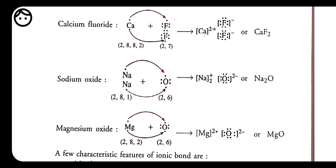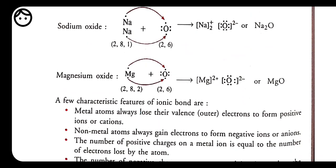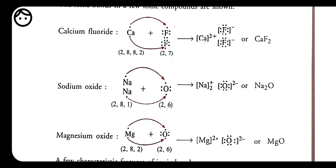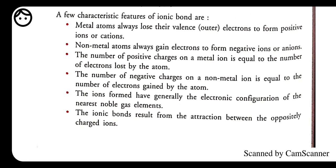The number of negative charges on a non-metallic ion equals the number of electrons gained. Oxygen takes 2 electrons to complete its octet, so oxygen has 2 negative charges. Fluorine gains only 1 electron, so each fluorine has 1 negative charge. In CaF₂, each fluorine gains one electron from calcium. So the number of charges depends on the number of electrons gained or lost.